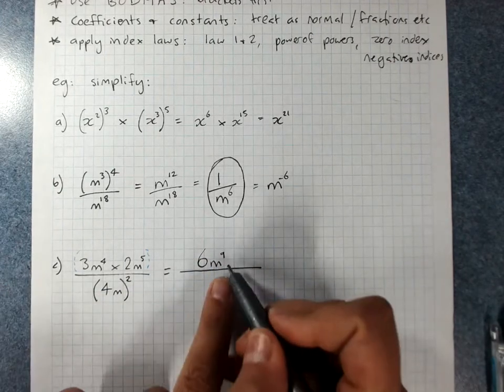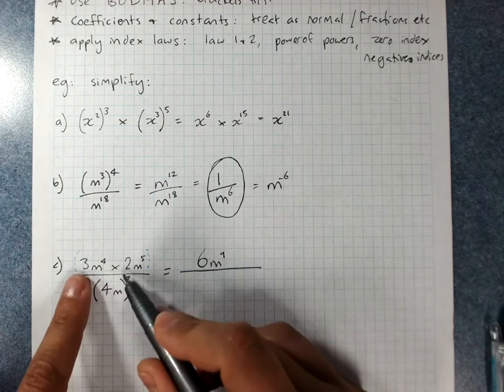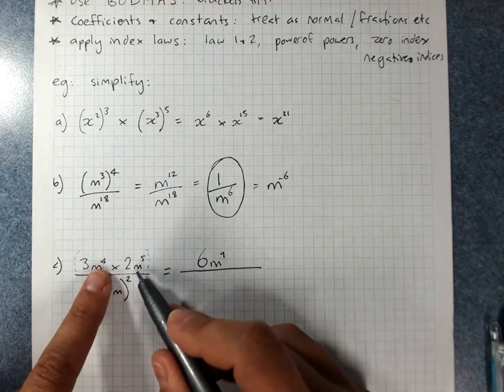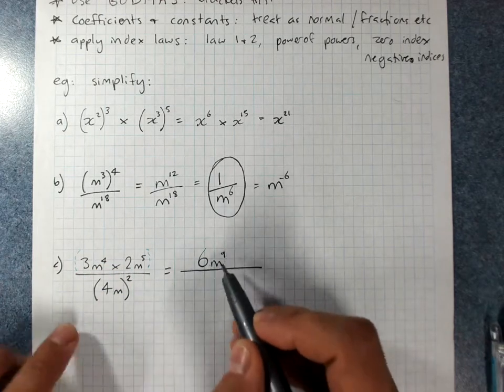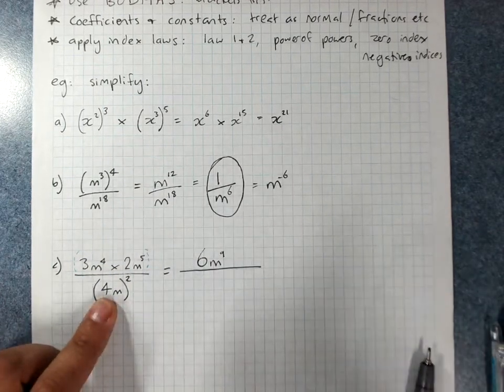Be careful that you're moving between normal number multiplication where I'm actually multiplying and index multiplication where I'm adding the powers. Careful. Don't forget powers of powers.